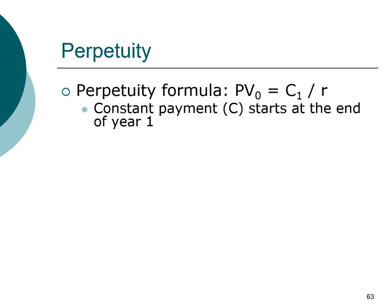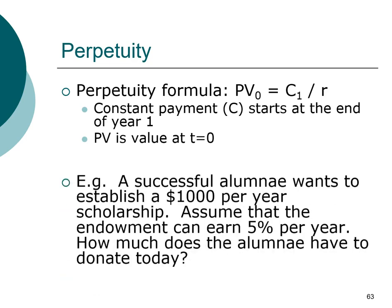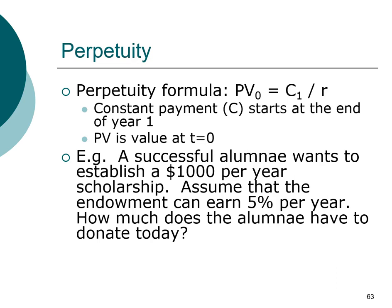One important thing to realize is that the cash flow has to start at year one, and the present value you compute is the value as of today. Let's take an example. Say you graduate and become very successful and want to establish a scholarship — a thousand dollars per year. That thousand dollars is your payment, the cash flow starting in year one. Assume the endowment can earn five percent per year — that's the interest rate.